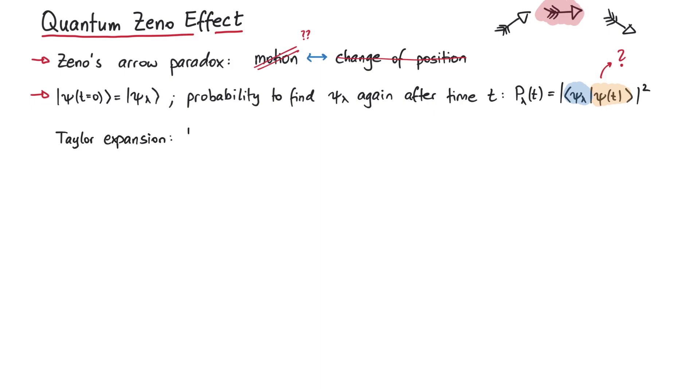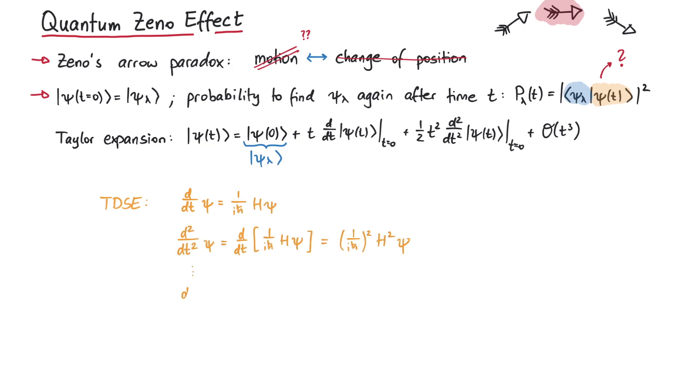Well, we can perform a Taylor expansion of psi around the point t equals zero, which looks like this. The state at t equals zero is our psi lambda from before, and the time derivatives of the wave function can be simplified by using the Schrodinger equation. In fact, the nth time derivative of psi can be written as 1 over i h-bar to the power of n and then applying the Hamiltonian n times onto the wave function.